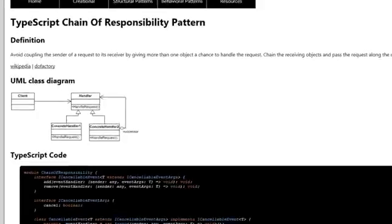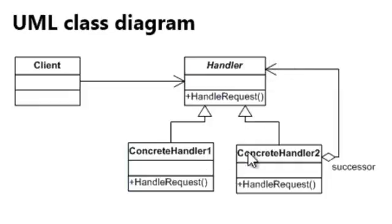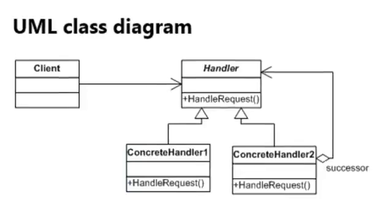Looking at the UML class diagram, we see a client that calls a handler and the handle request method, but the handler itself will call multiple concrete handlers to actually execute this request method. I created an example, so let's head over to Visual Studio.